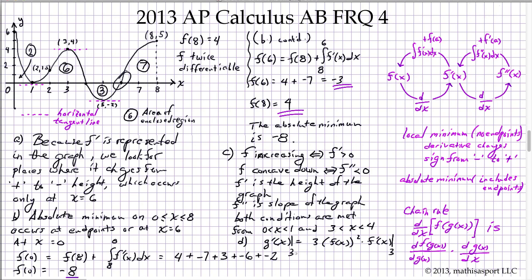So g prime of 3 equals 3 times f(3), which is given as negative 5 halves, squared, times f prime of 3, which we can read directly from the graph as 4.